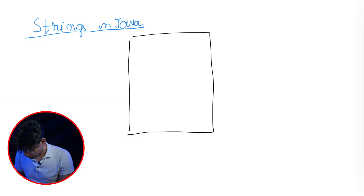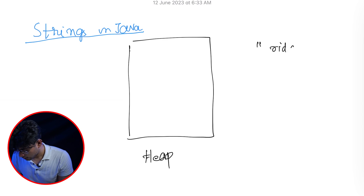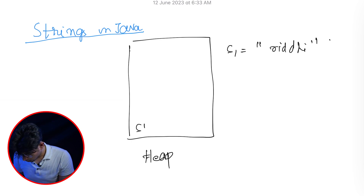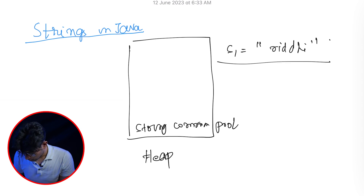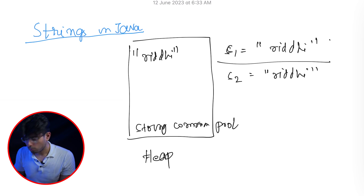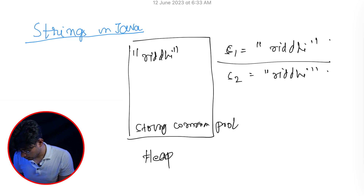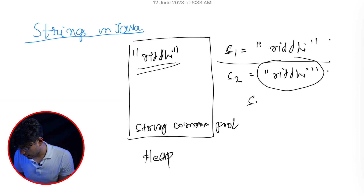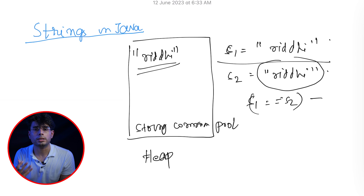So what the JVM does is in the heap it maintains a pool of strings - a string common pool. When you create a string like s1 equals to 'Riddhi', in this string common pool the JVM creates that string and returns the address to s1. Now if you also do s2 equals to 'Riddhi', the JVM won't create a new 'Riddhi' in the string common pool. It will first check whether that same string content already exists there, and since it does, it will return the same address. So if you print s1 == s2, it will return true.